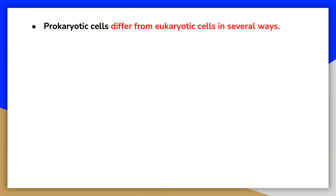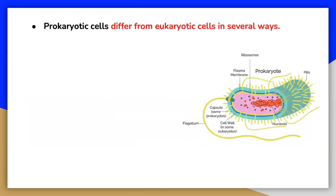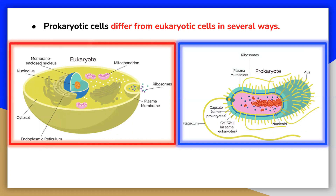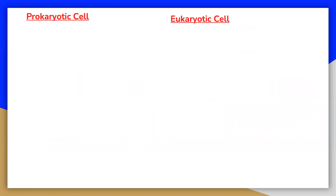Beyond basic components, cells can vary greatly between organisms and even within the same multicellular organism. The two largest categories of cells, prokaryotic cells and eukaryotic cells, are defined by major differences in several cell structures. The cellular organization of prokaryotic cells is primitive as they lack a membrane-bound nucleus and other membrane-bound cell organelles. Although prokaryotic and eukaryotic cells have many differences, they share some common features.